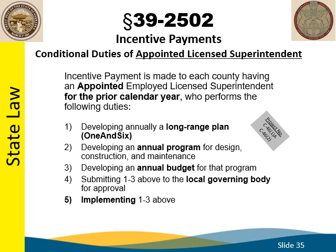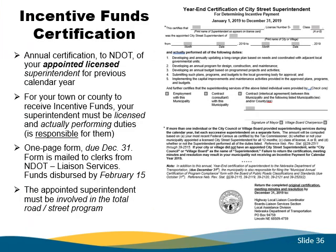The minimum duties are listed here. They include developing a one-in-six plan or program, annually developing a program for design, construction, and maintenance, developing an annual budget for that program, submitting plans and programs to the governing body for approval, and implementing the approved plans and programs. To receive incentive payments, your entity must submit a completed and signed year-end certification form. It will be mailed to your clerk, and the completed form is due back to the Nebraska Department of Transportation by December 31st via regular mail. In order to receive incentive payments, the appointed licensed superintendent must be actively involved in the total road or street program.